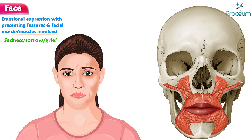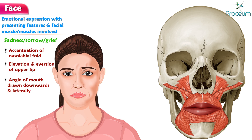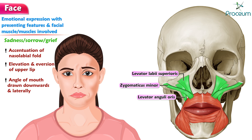Sadness, sorrow, or grief: accentuation of the nasolabial fold, elevation and eversion of the upper lip, and angle of the mouth drawn downwards and laterally — levator labii superioris, levator anguli oris, zygomaticus minor, and depressor anguli oris.